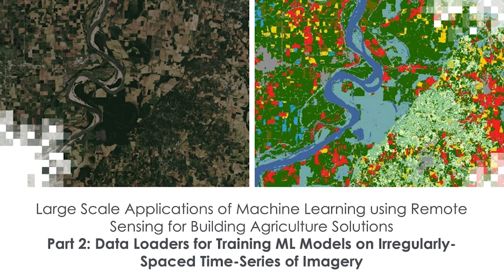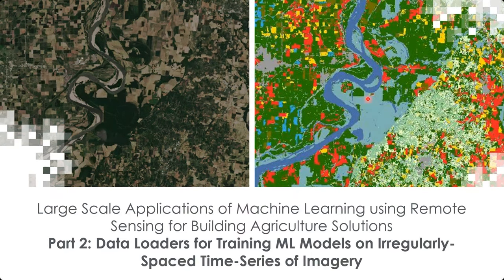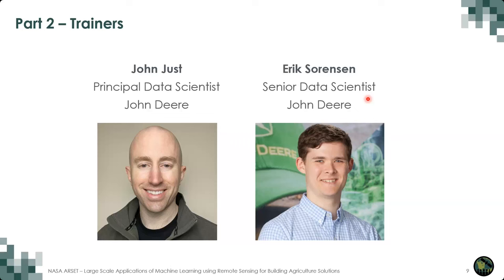I will now pass the presentation over to our guest instructors for this webinar series, Dr. John Just and Eric Sorensen from John Deere. Thank you all for joining us again for part two in our series on large-scale applications of machine learning using remote sensing for building agriculture solutions. This part is on data loaders for training ML models on irregularly spaced time series. I'm John Just, a principal data scientist at John Deere and affiliate faculty at Iowa State University in the Agricultural and Biosystems Engineering Department. Joining me is Eric Sorensen, a senior data scientist at John Deere, who will be giving the demo of the code in this part.